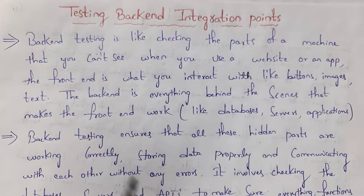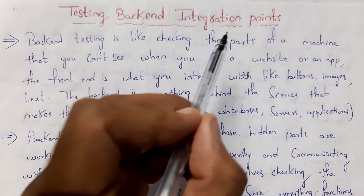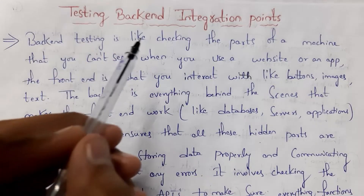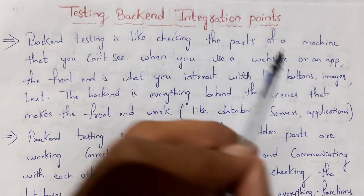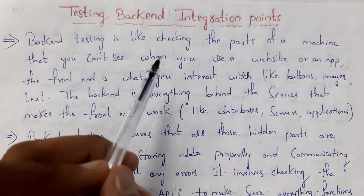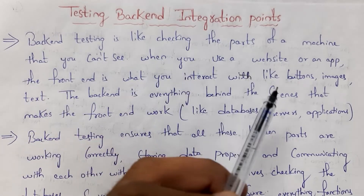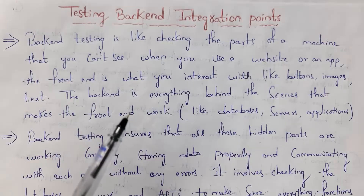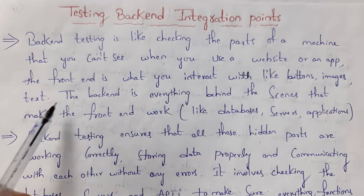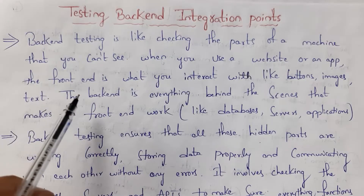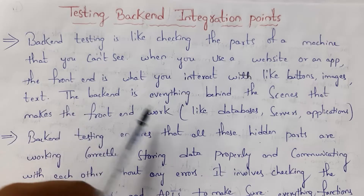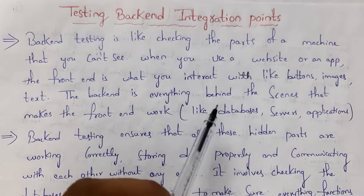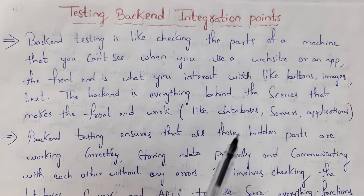Let's first explain testing backend integration points. Backend testing is like checking the parts of your machine that you can't see. When you use a website or app, the frontend is what you interact with — like text, buttons, images, etc. — whereas the backend is everything behind the scenes that makes the frontend work, like databases, servers, applications, etc.